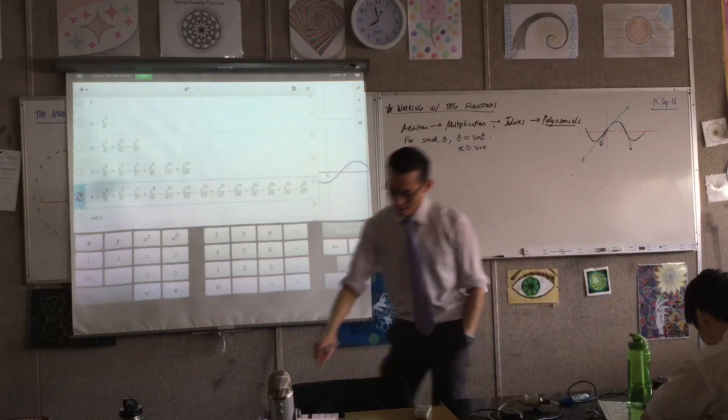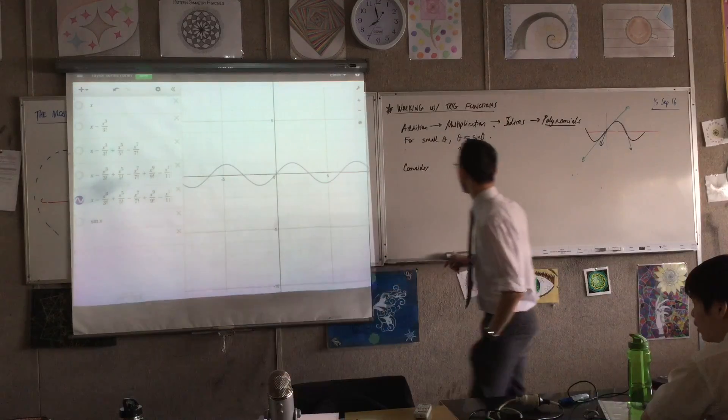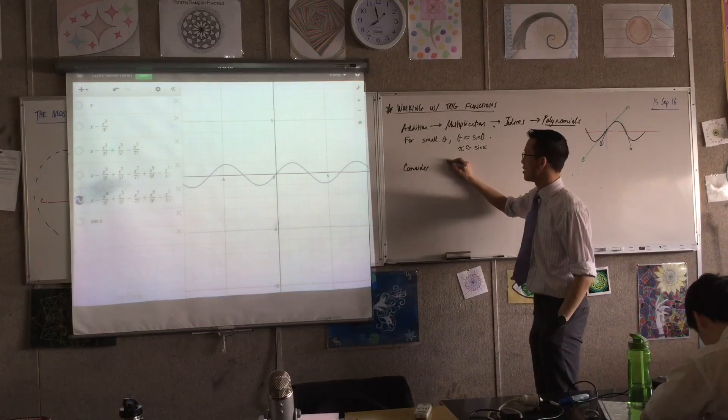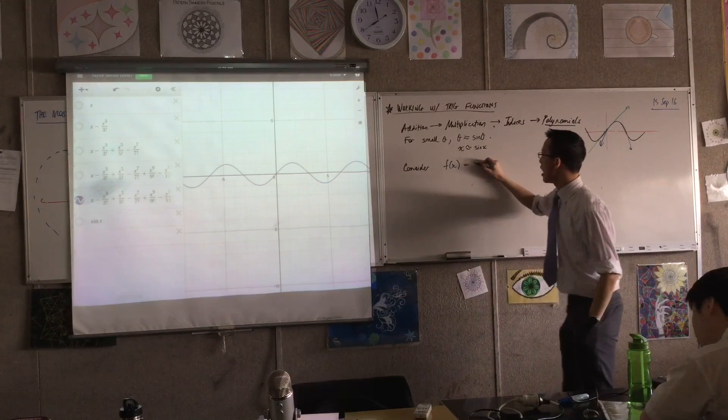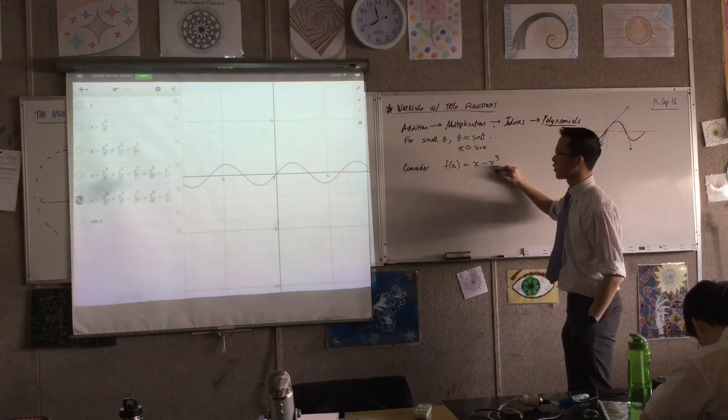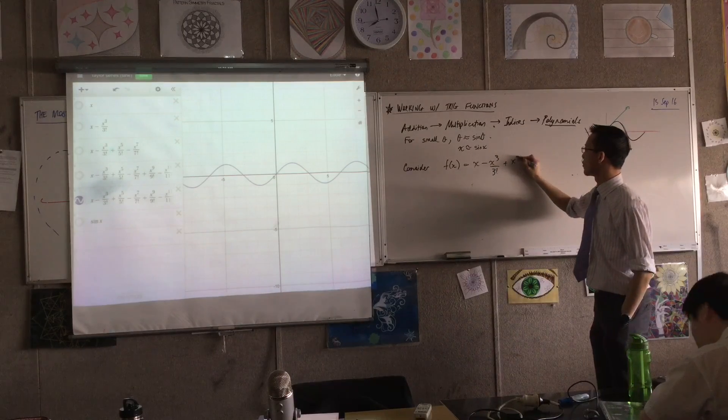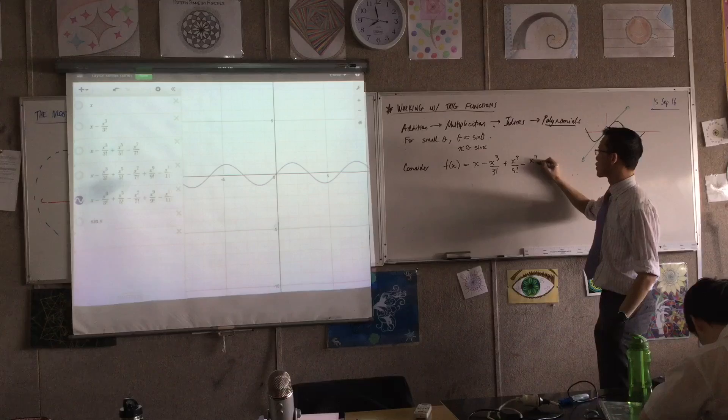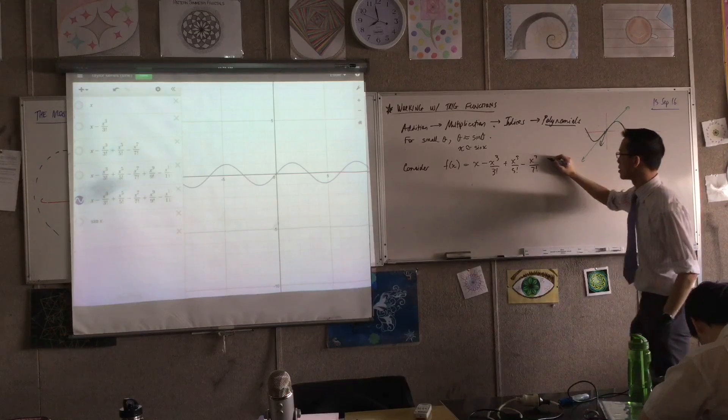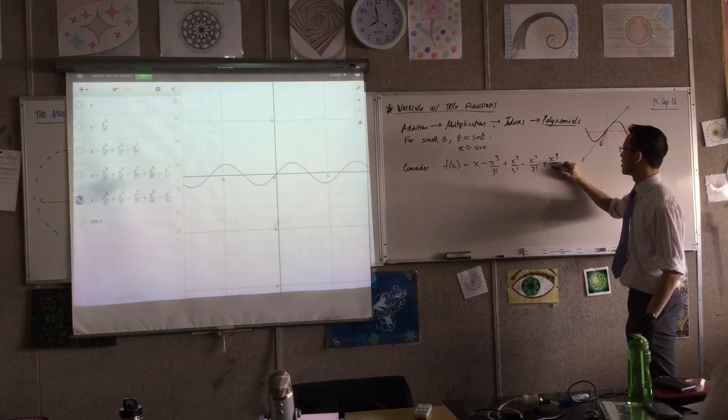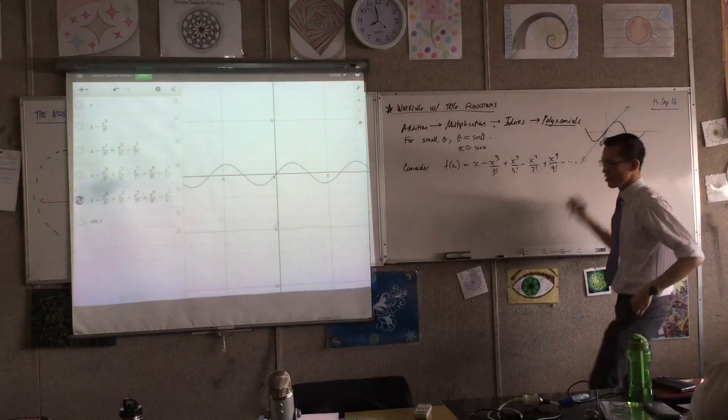So you don't need to write all of that. But if you just write, you know, this pattern here, this is a function here. I've got x take away x cubed on 3 factorial plus x to the 5 on 5 factorial. The signs alternate? That's suspicious. Okay, you get the idea.